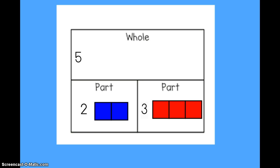Let's take a look at the subtraction sentence I could write using this part-part-whole mat. I started with five as my whole number, so that would be at the beginning of my subtraction sentence. I took away two — that was the first part — so I would write minus two. The other part is three, and that would be my difference, or the answer I get in subtraction.